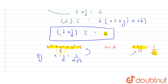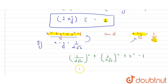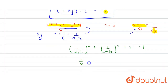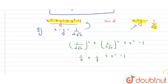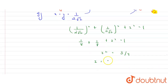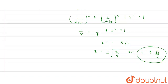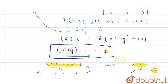Substituting x = y = 1/(2√2) into the first equation: (1/(2√2))² + (1/(2√2))² + z² = 1, giving 1/8 + 1/8 + z² = 1. So z² = 1 − 1/4 = 3/4, and therefore z = ±√3/4 = ±√3/2.